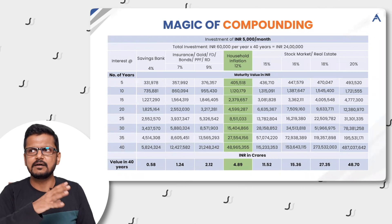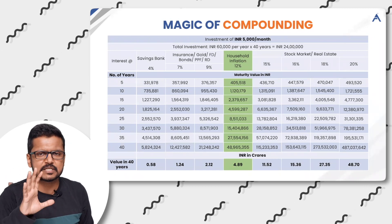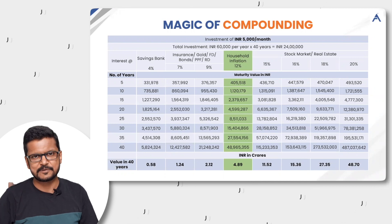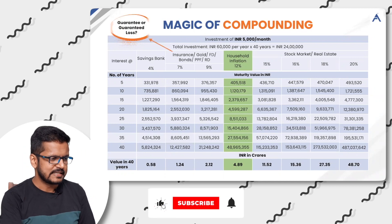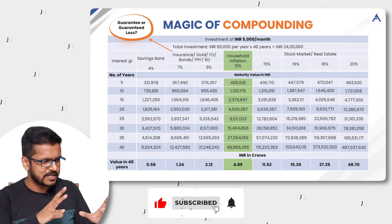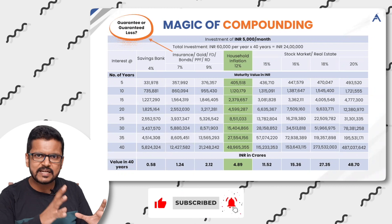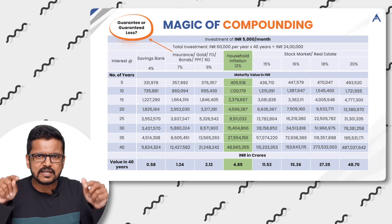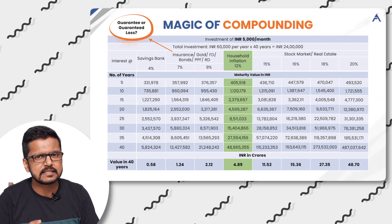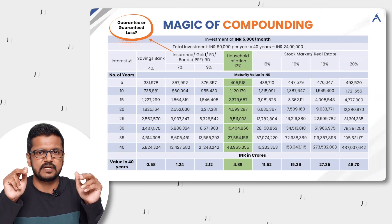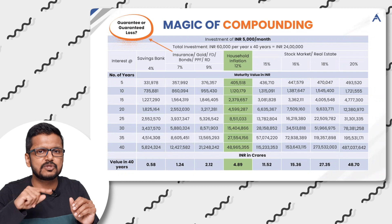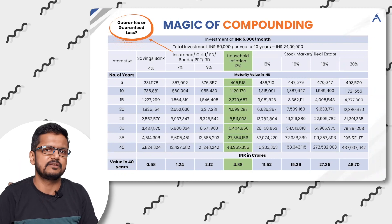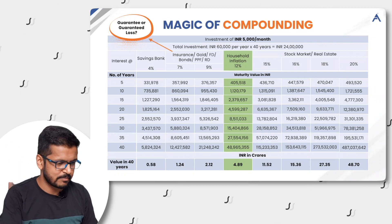So think about it. Insurance, gold, FD, PPF, and RD — is it really a guarantee or a guaranteed loss? Think about it. It feels safe and it feels good, but it is not safe for the long term because it will not beat inflation.